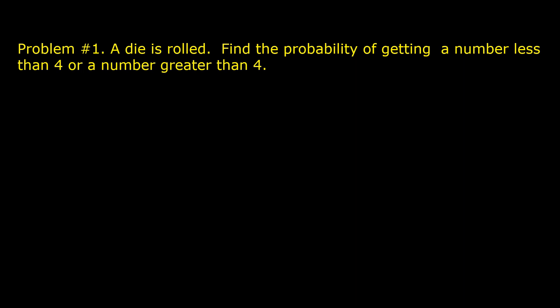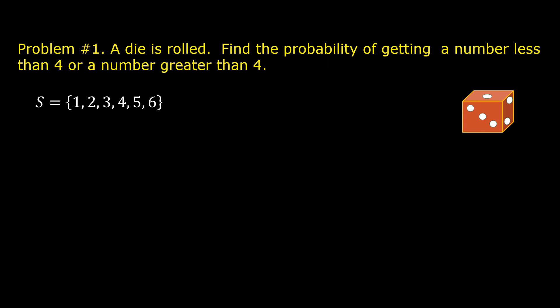Problem number one. A die is rolled. Find the probability of getting a number less than four or a number greater than four. If a die is rolled, the possible outcomes are 1, 2, 3, 4, 5, and 6. These are the outcomes in the sample space.